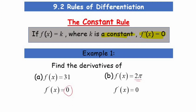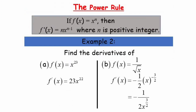Now let's look at the power rule. If f(x) = xⁿ, then f'(x) is found by bringing the power down as the coefficient and then subtracting the power by 1. That is the power rule.